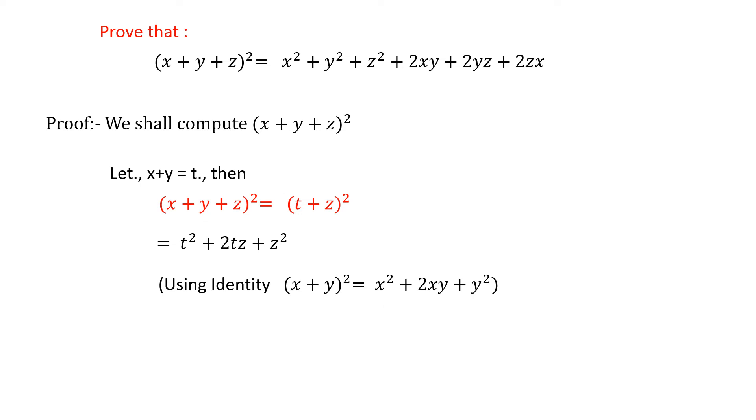We implement the identity: t²+2tz+z². Here, t² is (x+y)². Substituting the value of t = x+y, we directly substitute here.